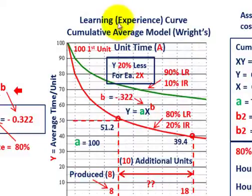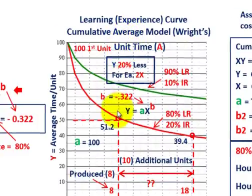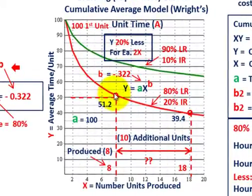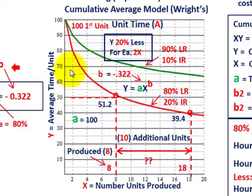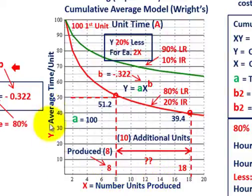What we're going to be going over here is a learning or experience curve based on the cumulative average model, or Wright's model. We're going to apply this learning curve to a problem. We're looking at average time on a per unit basis, with number of units produced on the x-axis and average time per unit on the y-axis.